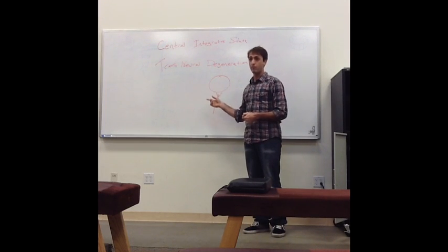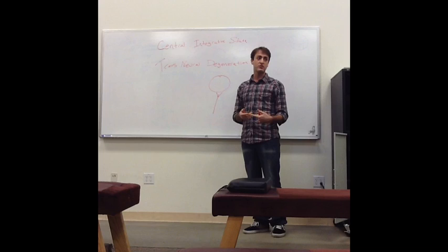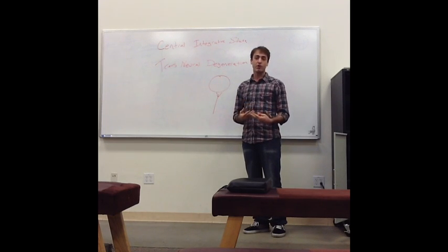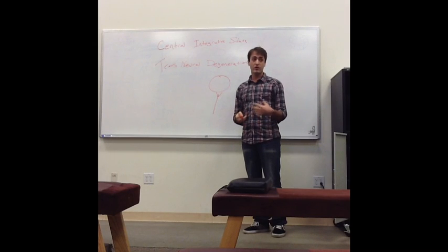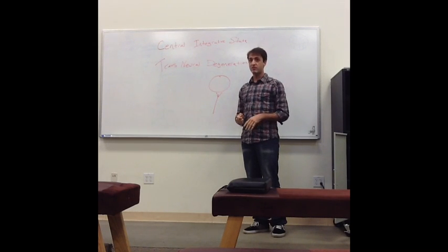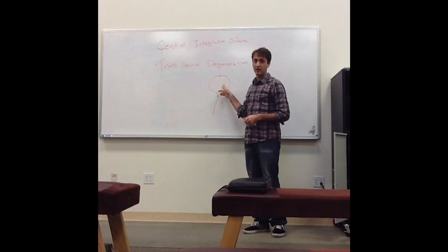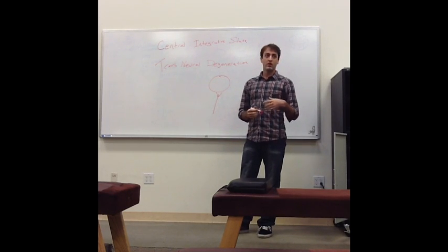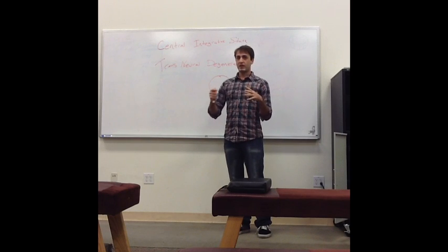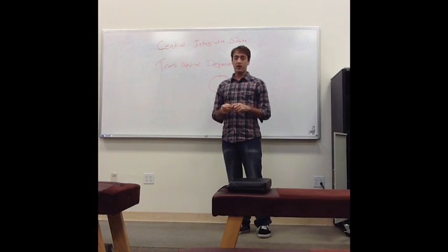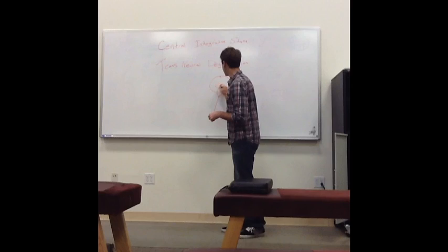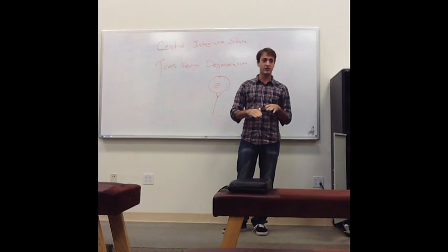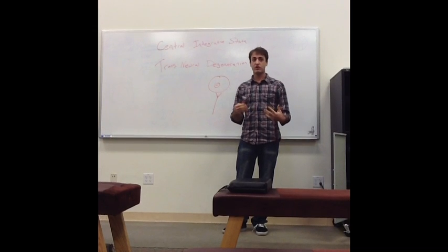When you activate this guy by excitation or inhibition, it's going to keep him alive, keep him making proteins, excitatory or inhibitory. But when you cut out all stimulus, he starts going into decline. When he goes into decline, he's not going to be making as many proteins as he's used to. These proteins are what keep the negative charge inside the cell. He's making anionic proteins to keep the negative inside. When he's not being activated because he's a lower central integrative state, he enters a state of transneural degeneration.